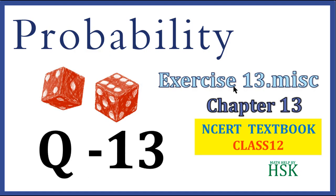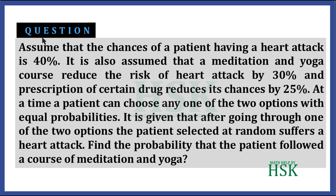This is question number 13 of the miscellaneous exercise of chapter 13, Probability. The question is: assume that the chances of a patient having a heart attack is 40%. It is also assumed that a meditation and yoga course reduces the risk of heart attack by 30%, and prescription of a certain drug reduces its chances by 25%. At a time, a patient can choose one of the two options with equal probability.